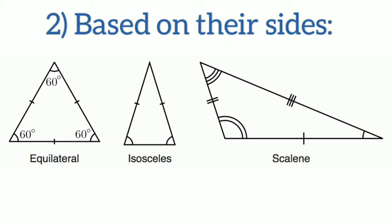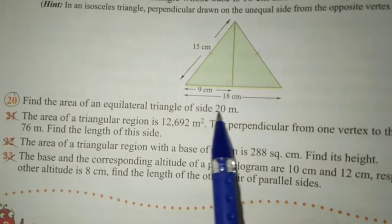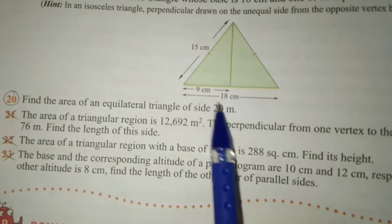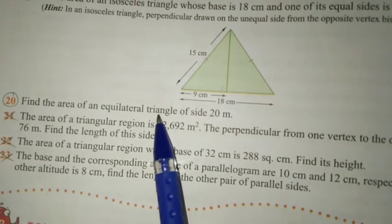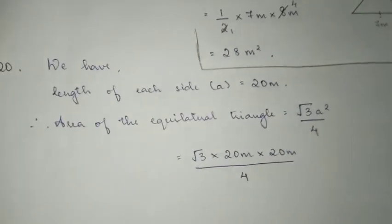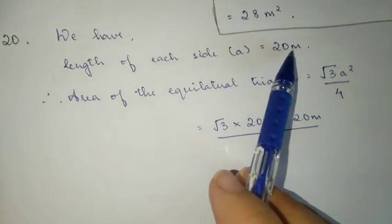Now, question number 20: Find the area of an equilateral triangle of side 20 meter. We have the length of each side is 20 meter.